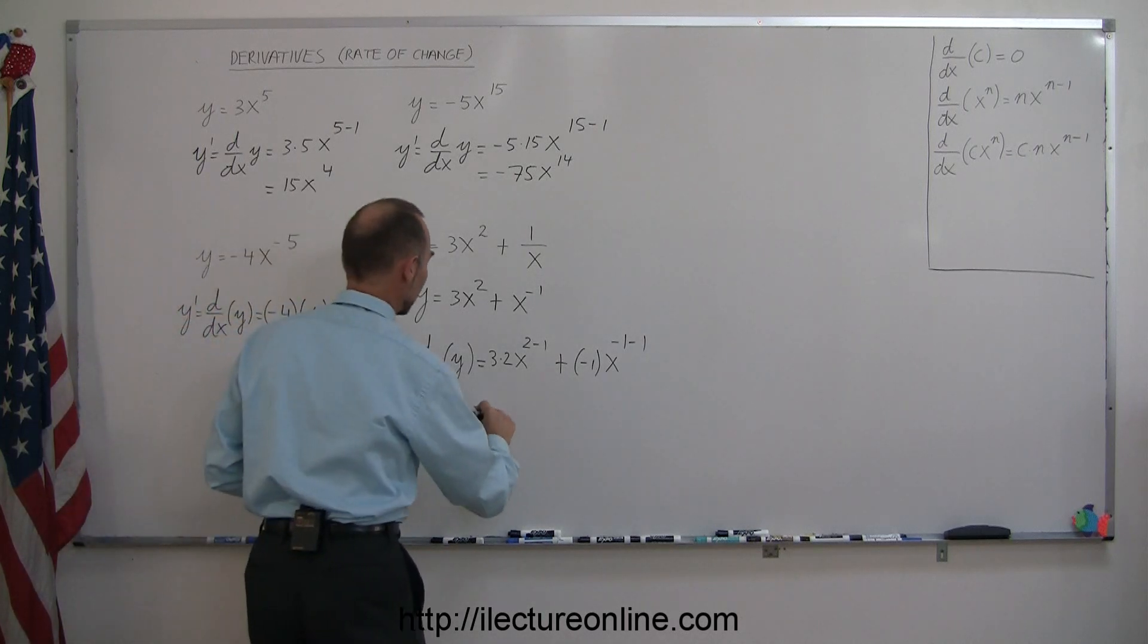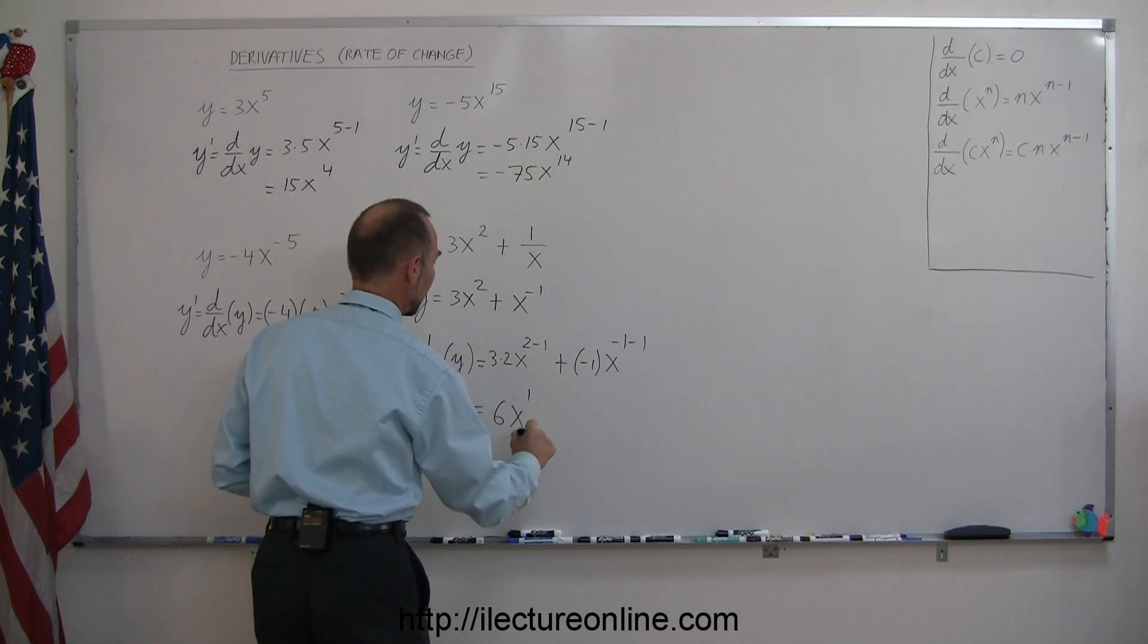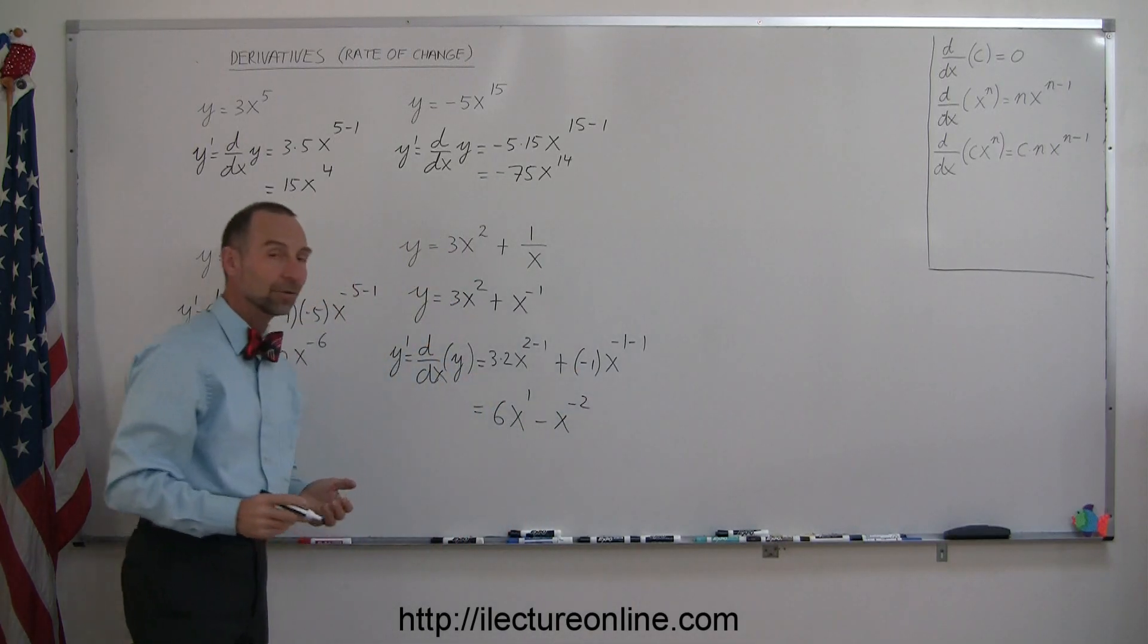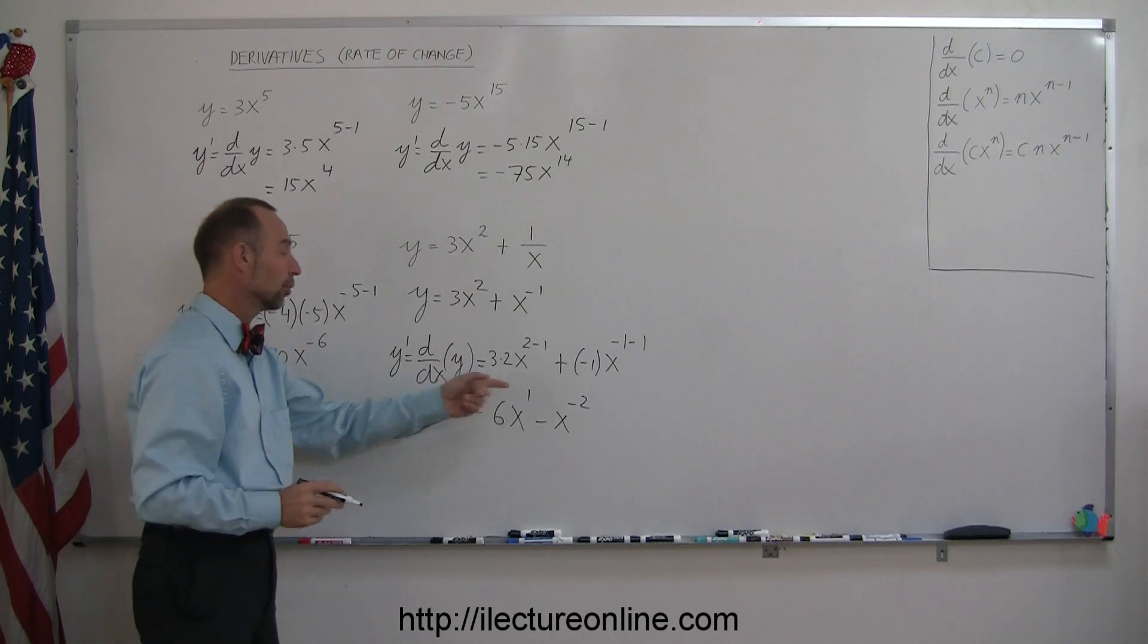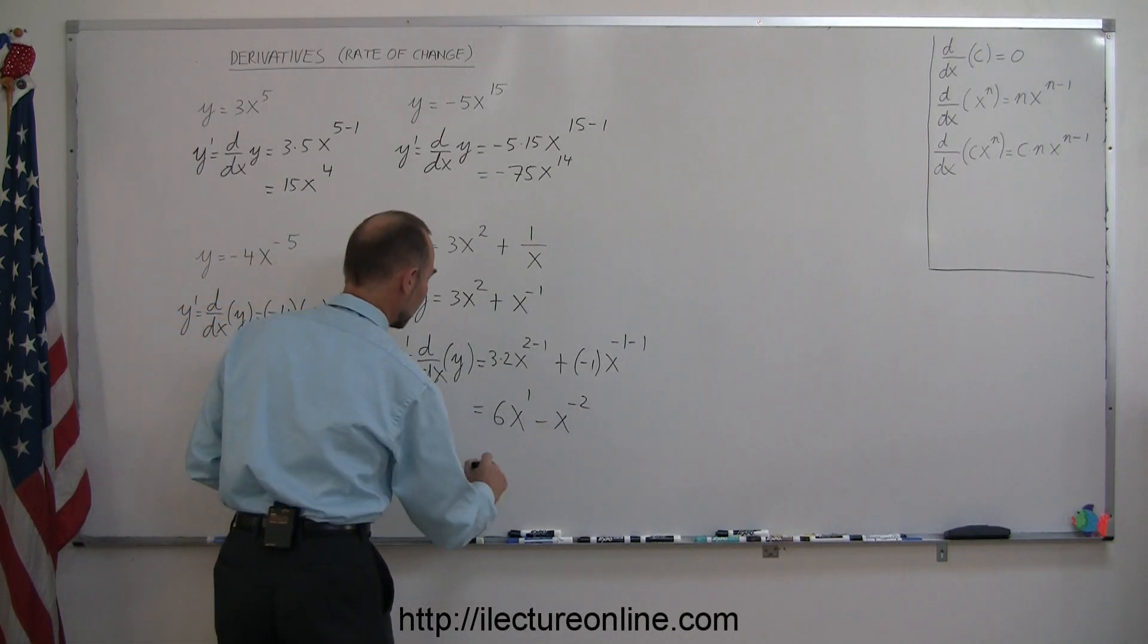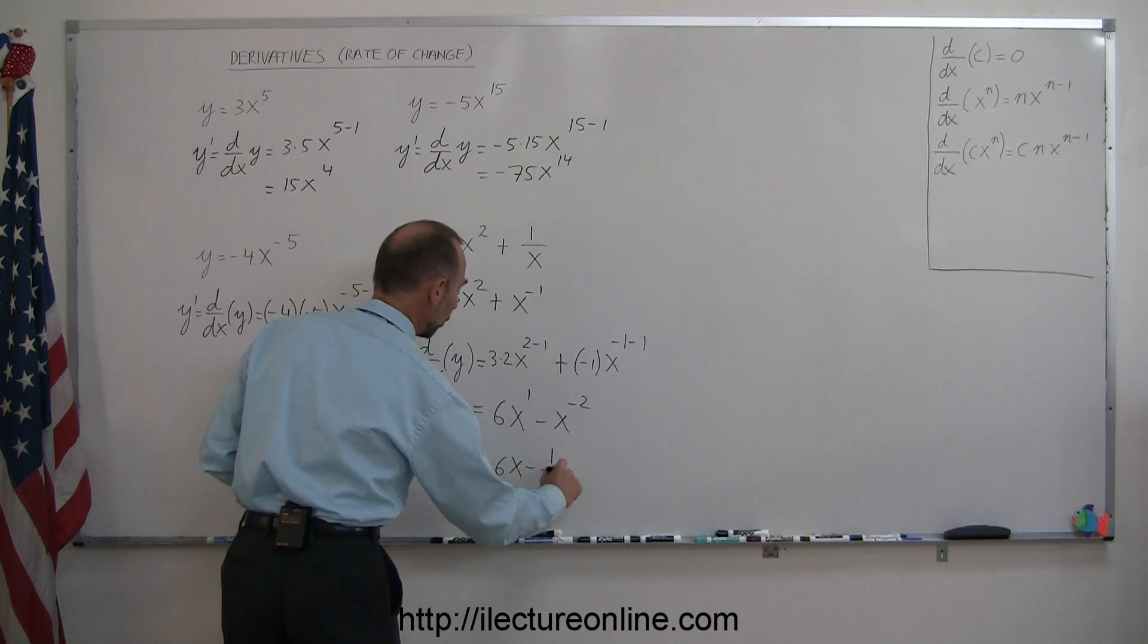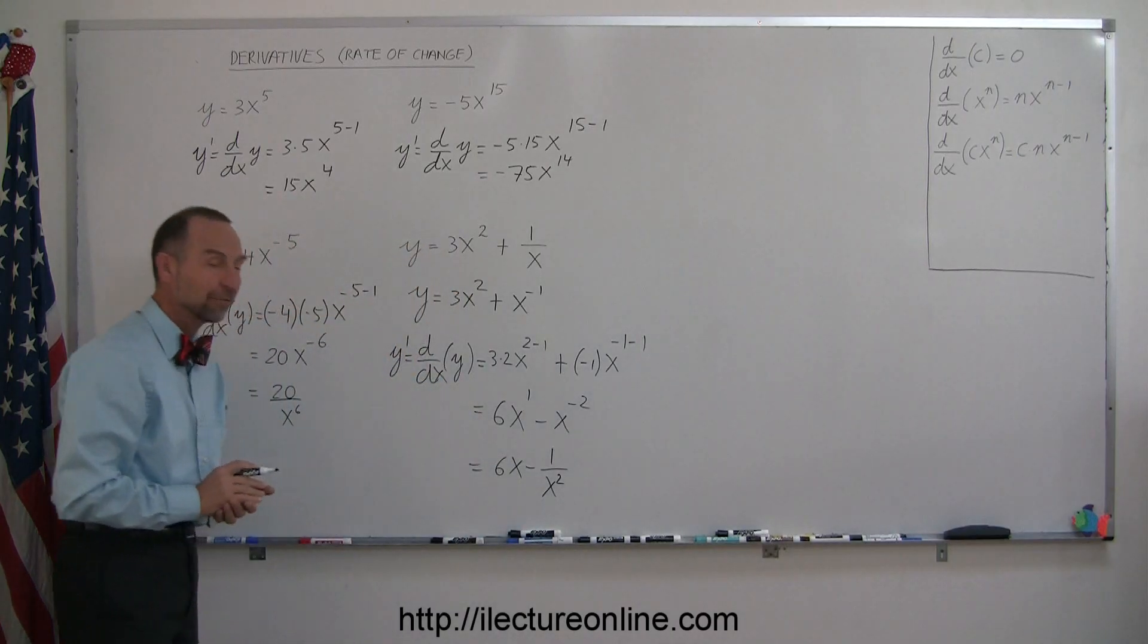So this then becomes 6x to the first power minus x to the minus 2 power. And then to simplify things, we can get rid of that to the first power and bring this down to the denominator. So this is 6x minus 1 over x squared, and that's the proper way of writing the final answer.